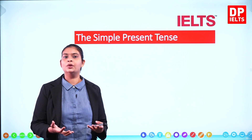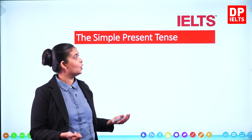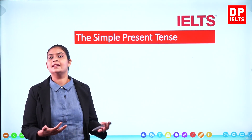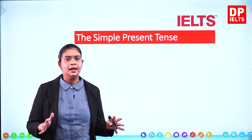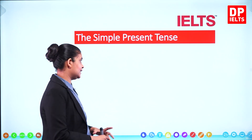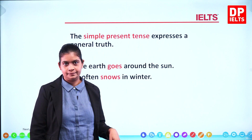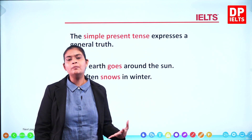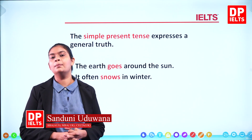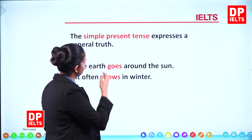So we can have a look at how do we write a correct sentence in the simple present tense. When do we use it? What is the sentence structure? We are not going to learn it in terms of complex sentences but very simple sentences. The simple present tense expresses a general truth. It means that usually when we talk about general truths, we can use the simple present tense.